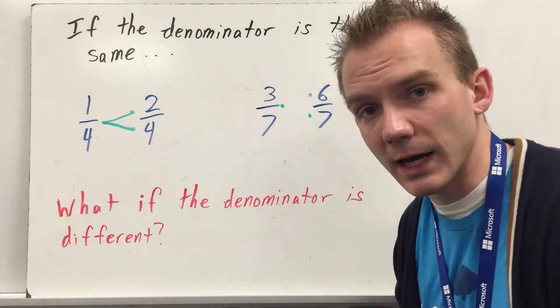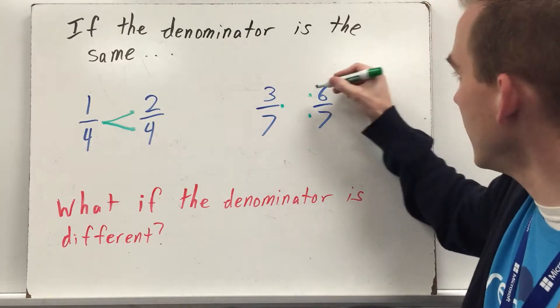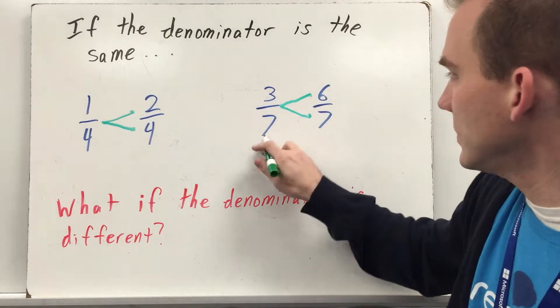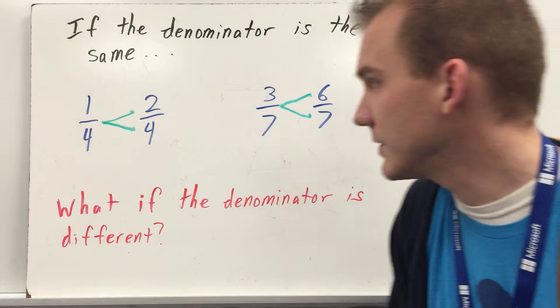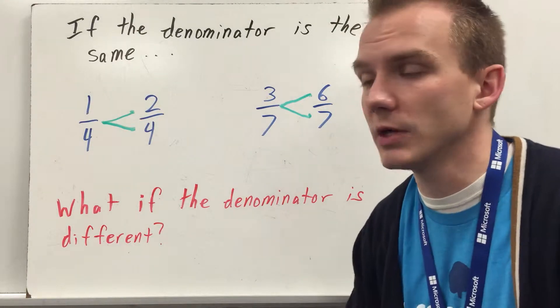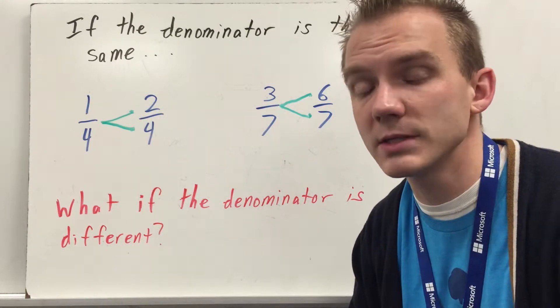And this one gets one dot. The bigger fraction gets two dots, the smaller fraction gets one. Then I simply connect the dots. Three-sevenths is less than six-sevenths. Use this dot strategy, it'll make sure your symbol points the correct way every time.